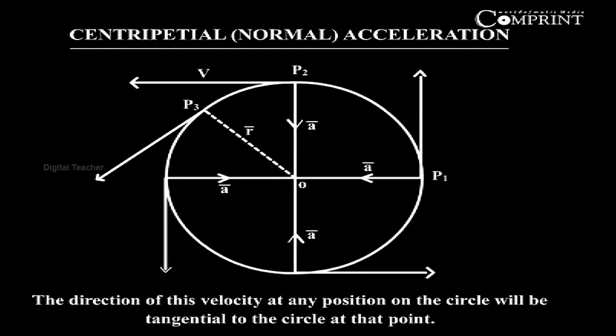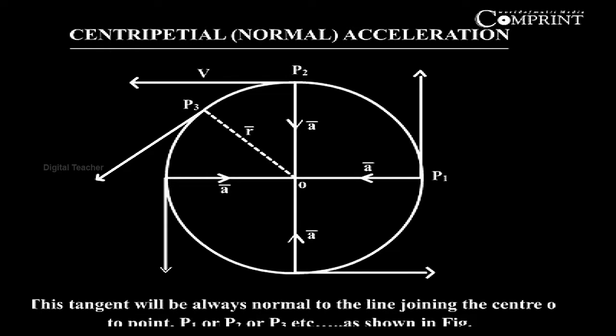The direction of this velocity at any position on the circle will be tangential to the circle at that point. This tangent will always be normal to the line joining the center O to the point P1, P2, P3, etc., as shown in the figure.